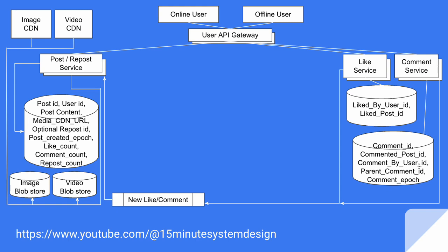Whenever a like or comment happens on any post, we should maintain the count of number of likes and comments in the metadata DB. The like service and comment service publish an event to a message queue saying there's a new like or new comment in the system, which gets consumed by a service — it could be the post service or some other service — that increments the like count and the comment count in the metadata DB.